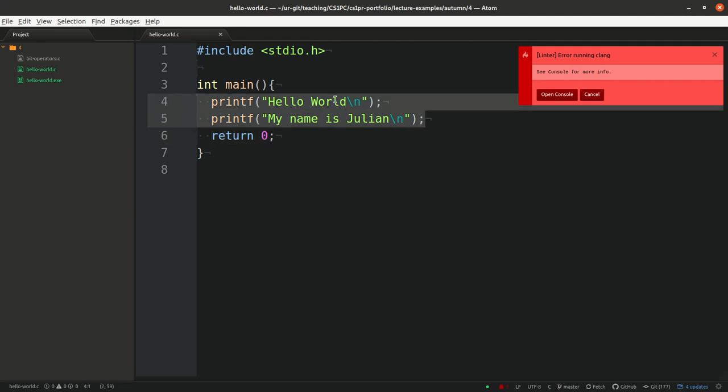So return zero means our program has been successfully executed. And it did succeed because it printed hello world. My name is Julian.